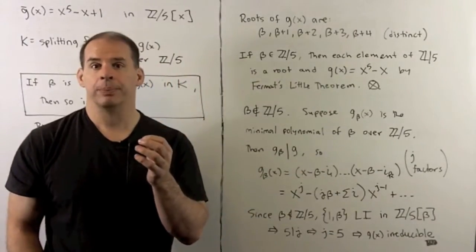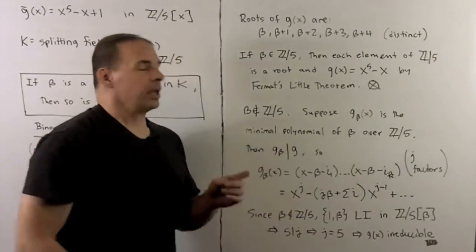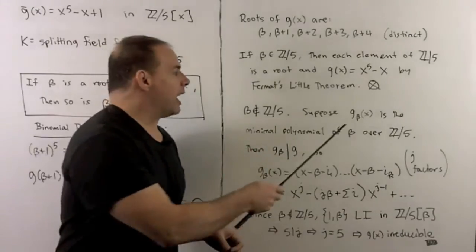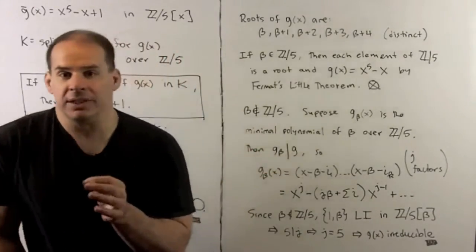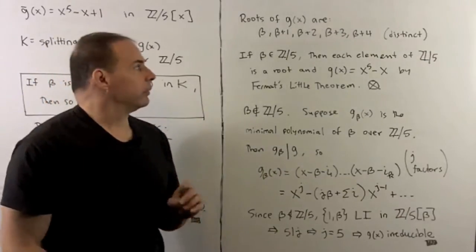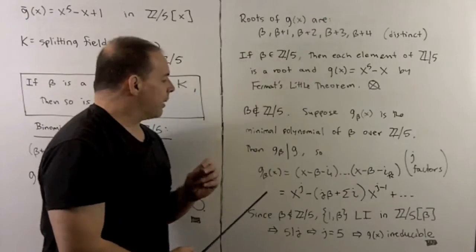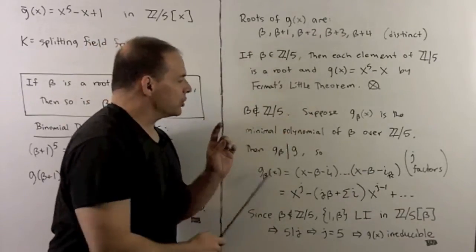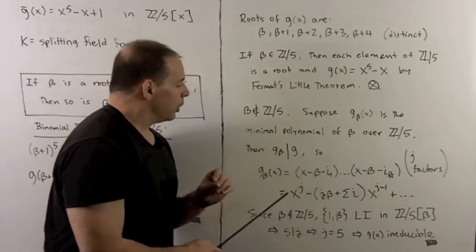This is irreducible. And because g of beta is zero, the minimal polynomial divides g. Now, that means the factors of the minimal polynomial are going to come from these roots. So let's see what can happen. So if I take a product of some number of these factors, say we have j of these, what do we get? Well, we'll have x to the j. The next term is going to be in the form j times beta plus the sum of these i's that we're using.